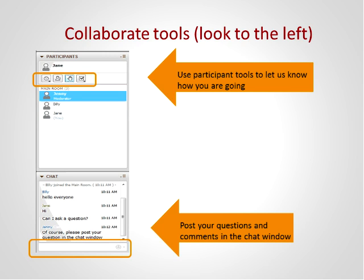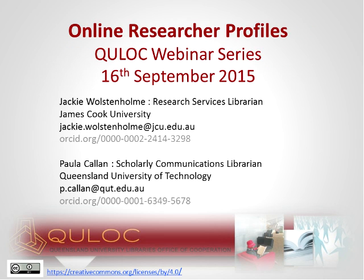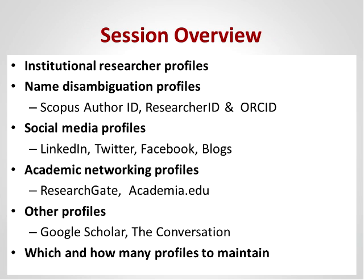Thanks, Sue. So it's Jacqui here — hello everybody. I'll just turn my video on to say hi and then turn it off to save bandwidth. Today I'll present the first part of the webinar and then hand over to Paula. I'm going to talk about institutional researcher profiles and name disambiguation profiles — that is the scope of author IDs and researcher ID. Paula will pick up on name disambiguation by explaining ORCID, then continue to social media profiles, academic networking profiles, and other profiles. Paula will close on which and how many profiles to maintain, and open for questions.